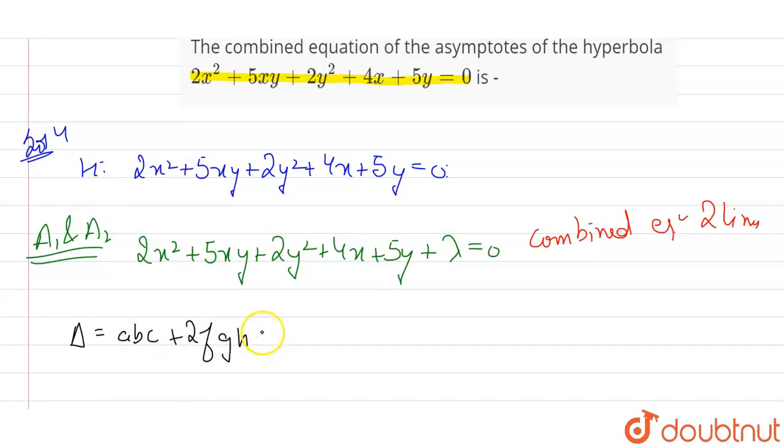So ABC what? 2FGH minus AF² minus BG² minus CH² equals to what? 0. Okay, so this is the condition that it should fulfill.